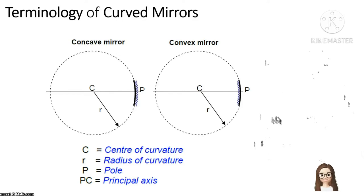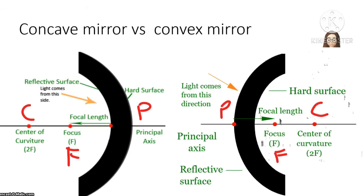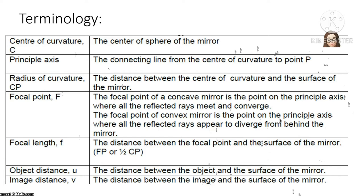Terminology of curved mirrors: Both concave and convex mirrors are spheres formed from a hollow glass. C is the center of curvature — actually the center of the sphere that forms the mirror. R is the radius of curvature. P is the pole, meaning the center of the mirror. CP is the principal axis — the connecting line from the center of curvature to point P. The radius of curvature CP is the distance between the center of curvature and the surface of the mirror.